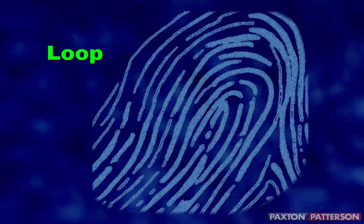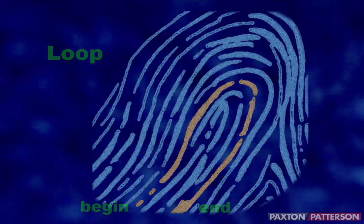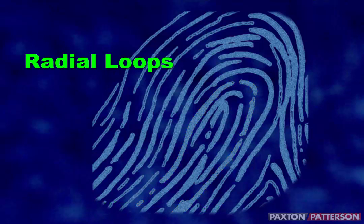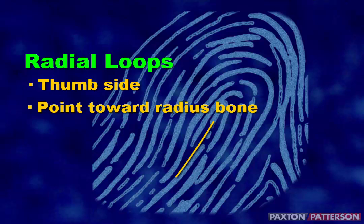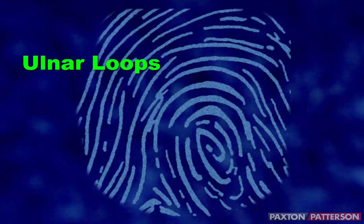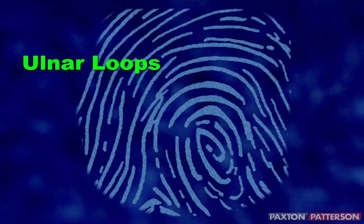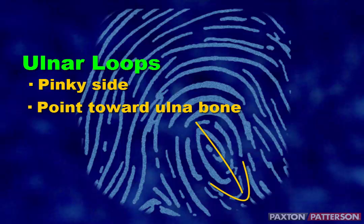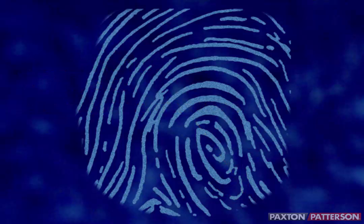Loop patterns are the most common — they're found in about 70% of the population. In a loop pattern, ridges begin and end on the same side. Radial loops start and end on the thumb side of the finger and point toward the radius bone in the forearm. Ulnar loops start and end on the same side as the pinky finger and point toward the forearm's ulnar bone.